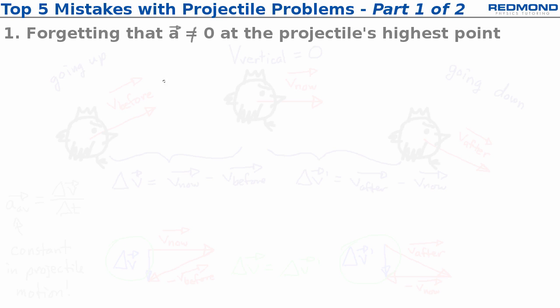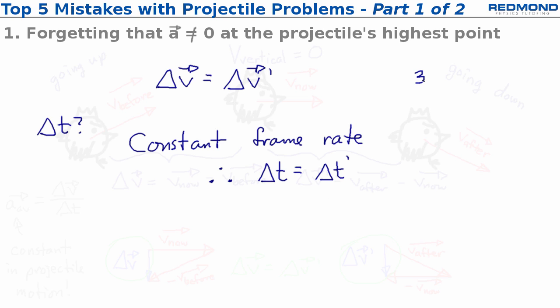Now what about delta t? The camera records video at a constant frame rate so the amount of time between any two successive snapshots is constant. For example, at 30 frames per second there would be 1/30th of a second between two successive snapshots. Therefore, delta t between before and now is the same as delta t between now and after.